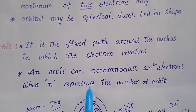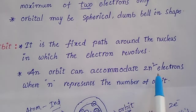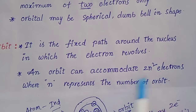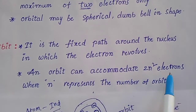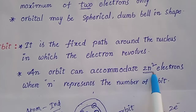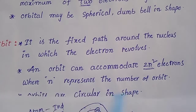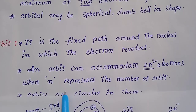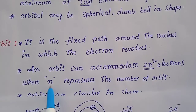An orbit can accommodate a maximum of 2n² electrons. In each orbit, the maximum number of electrons you can accommodate is 2n², where n represents the number of the orbit.